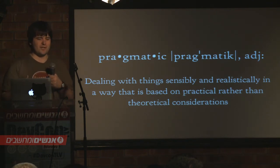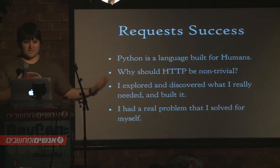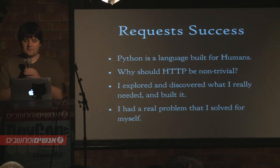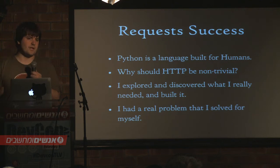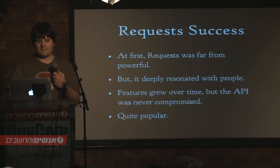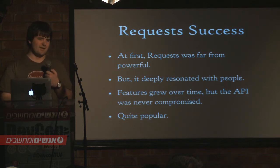I think there's a very pragmatic way of looking at the world. Pragmatic means dealing with things sensibly and realistically in a way that is based on practical rather than theoretical considerations. So I wrote the Requests library, and basically the way I built it was I just tried to figure out how I wanted this library to be before I wrote anything. I had this real problem that I solved for myself, and I didn't even think anyone was going to use it. But it got immensely popular really quickly, people started getting on board, and a lot of features grew over time — the API was never compromised.